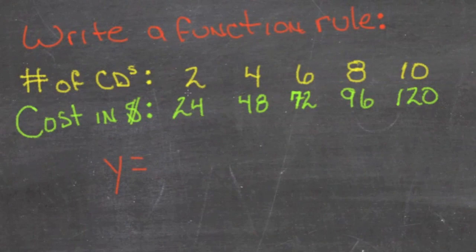If we look at the table, we can see that if 2 CDs is $24 and 4 CDs is $48 and so on, then each CD must be $12.